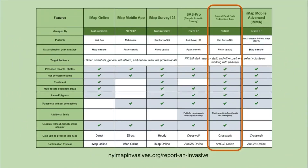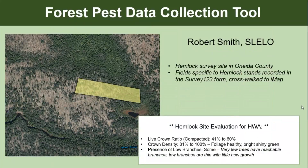The Forest Pest Data Collection Tool is generally for forest pests like insects such as emerald ash borer or hemlock woolly adelgid. I've asked Robert Smith, the terrestrial coordinator from SLILO, to talk about how SLILO has used this tool for their survey efforts. I'll hand it off to Robert.